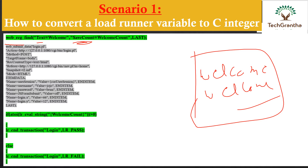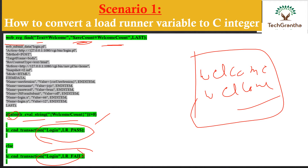After capturing the welcome count, since that is a string and strings cannot be passed directly in LoadRunner, we first evaluate the string using lr_eval_string. Then we convert it to an integer using the atoi function, which converts a string to an integer. We then put a condition: if the welcome count is greater than 0, the transaction should pass; otherwise it should fail. That is the error handling concept as well.